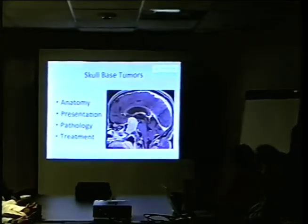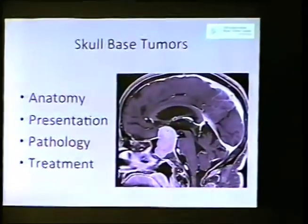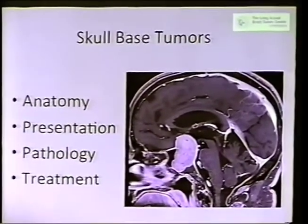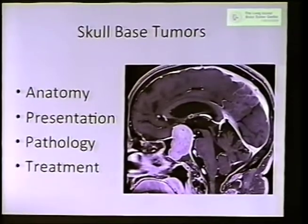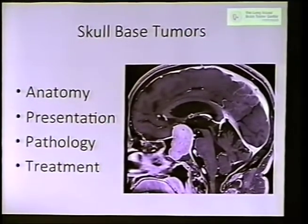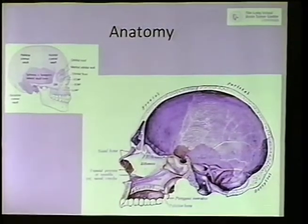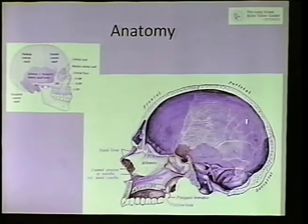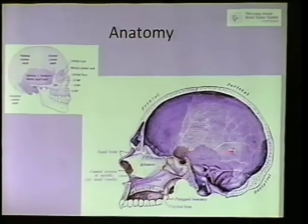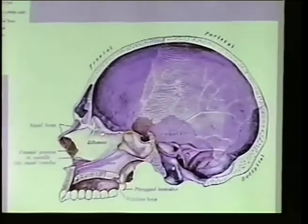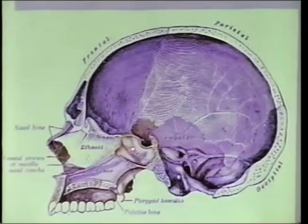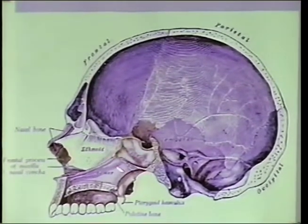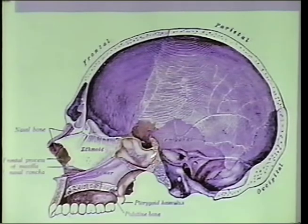We'll start with the basic anatomy. How do people present? How do you know you have a tumor of your skull base? What are the different pathologies we might encounter? The skull base is right along the bottom of the skull — this is where the brain sits. The cerebellum is back here. We're interested in the area of the nose — the ethmoid sinuses here, and the sphenoid sinus. This is the area that gets clogged up during sinus surgery.